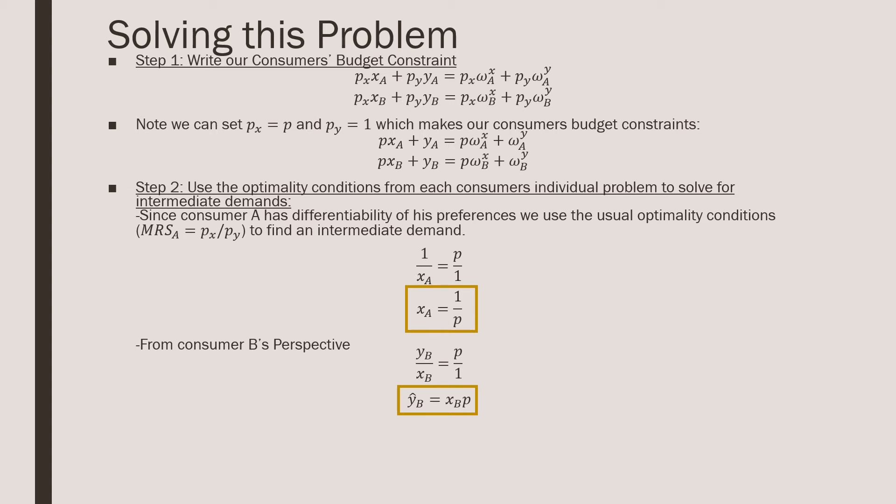Now note, in this optimality condition, we've actually derived one of our demand equations, proper demand equations. So for x_A, it does not depend on income, and we can say that for sure. And that's just a property of quasi-linear preferences in general.